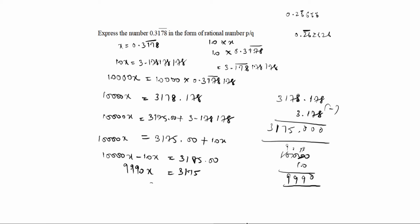X is equal to 3175 divided by 9990. So cross it. So 5th table you have to divide it. This is 1998. This is 635 comes.